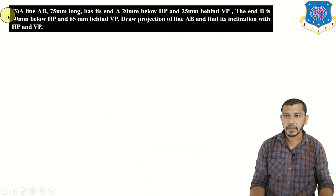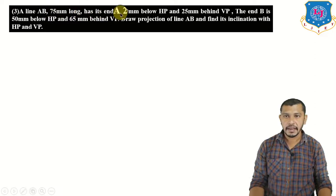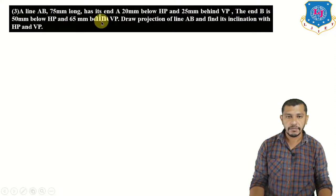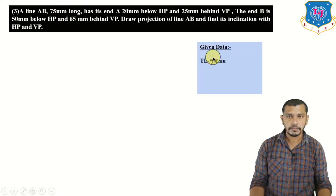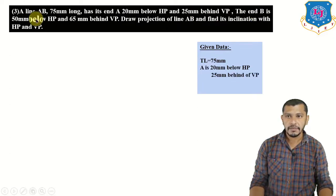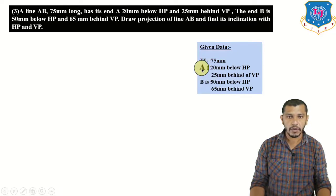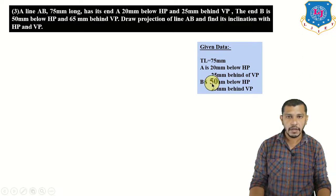Next example: a line AB 75 mm long has end A 20 mm below HP and 25 mm behind VP; end B is 50 mm below HP and 65 mm behind VP. Draw the projection of line AB and find its inclination with HP and VP. The true length is 75 mm. Theta and phi are not given; instead the locus of B is known and we have to find theta and phi.